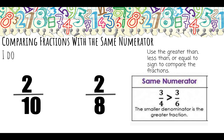Let's look at two-tenths and two-eighths. You and I both ate two pieces from our cake, but my cake had ten pieces and your cake only had eight pieces. So who technically ate more? You did. Two-tenths is less than two-eighths.